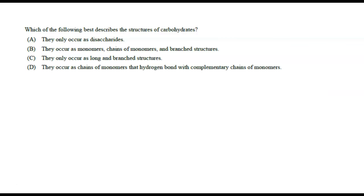Question: which best describes the structure of carbohydrates? Option B says they occur as monomers, chains of monomers, and branched structures. That's the answer — branched structures include things like glycogen and certain kinds of plant starch.